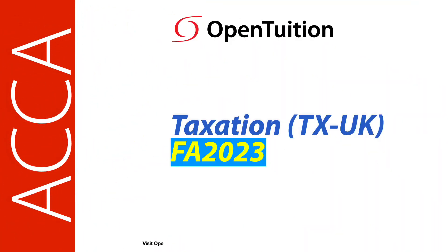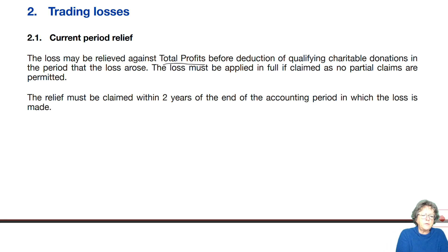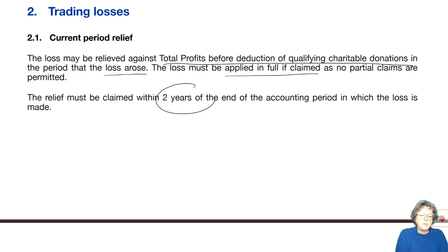This is a lecture from Open Tuition. To benefit from the lecture, you should download the free lecture notes from opentuition.com. So let's rediscuss the current year period relief. It would be set against total profits before QCDs in the period in which the loss arose for claim, no partial claim, and the claim must be made within two years.